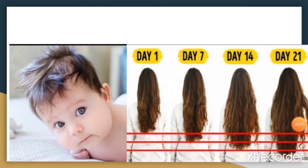Many people want strong and healthy hair, especially as they grow older. Your hair grows around 0.5 inches (1.25 centimeters) per month and 6 inches (15 centimeters) per year. How fast it grows depends on factors like age, health, genetics, and diet. Although you can't change factors like age and genetics, diet is one thing you have control over.